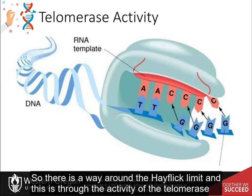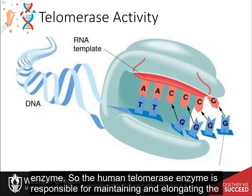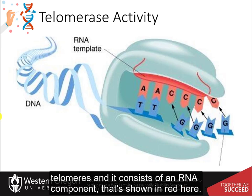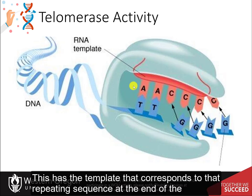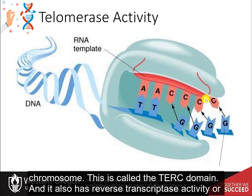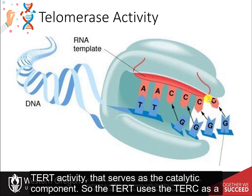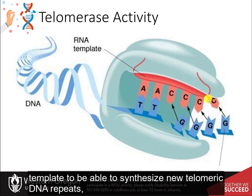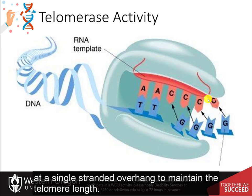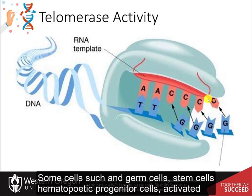There is a way around the Hayflick limit, and that is through the activity of the telomerase enzyme. The human telomerase enzyme is responsible for maintaining and elongating the telomeres. It consists of an RNA component — shown in red — called the TERC domain, which provides the template corresponding to the repeating sequence at the end of the chromosome, and it also has reverse transcriptase activity called TERT, which serves as the catalytic component. The TERT uses the TERC as a template to synthesize new telomeric DNA repeats at a single-stranded overhang to maintain telomere length.